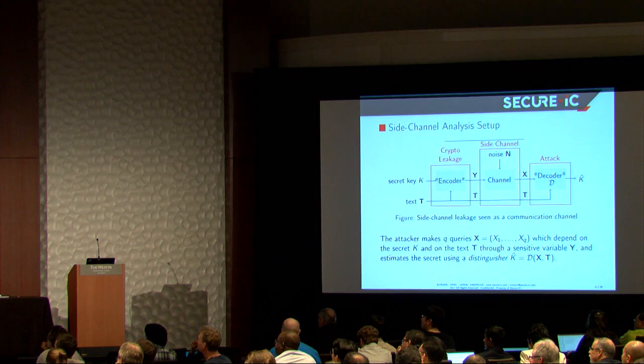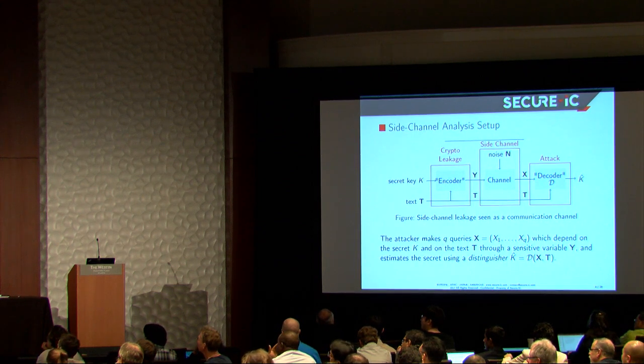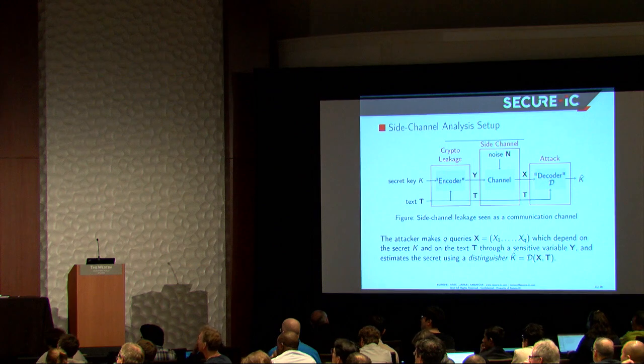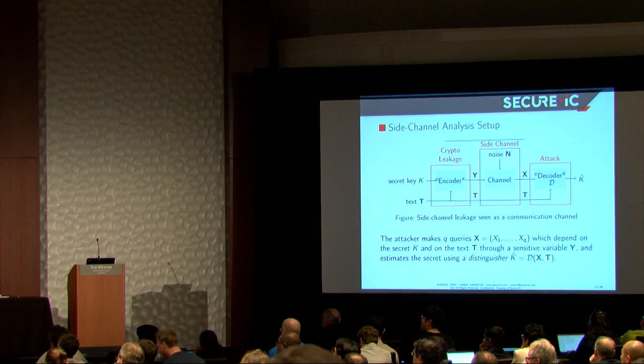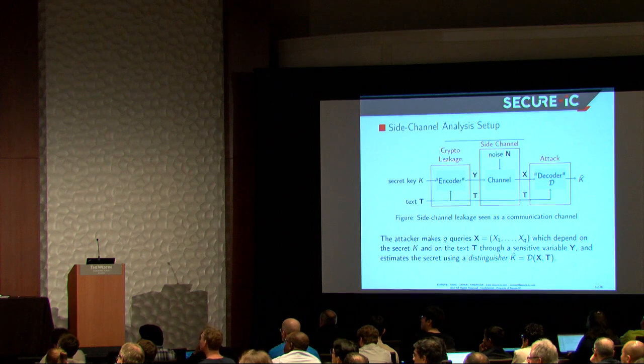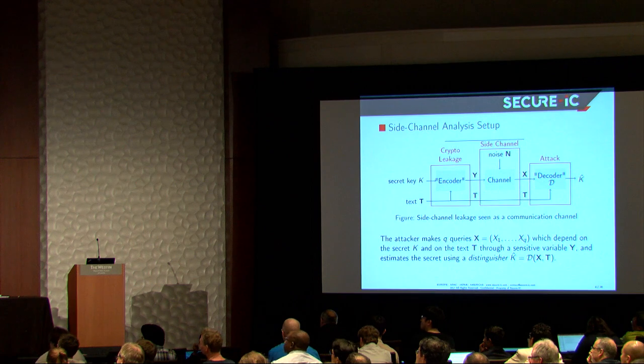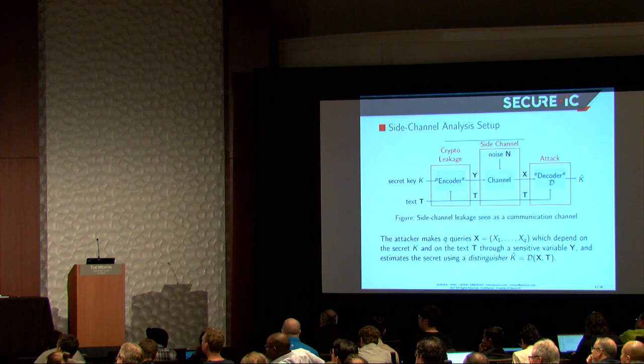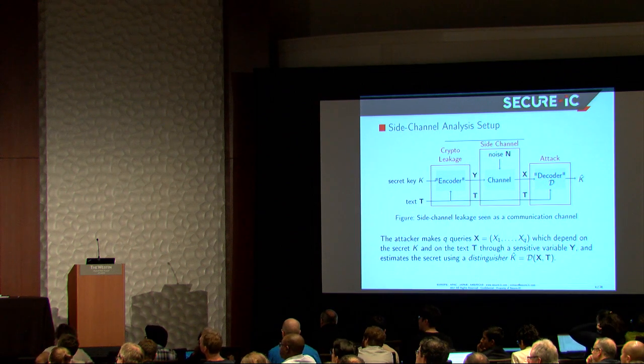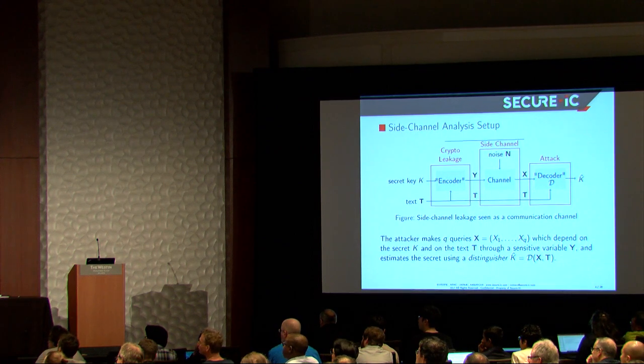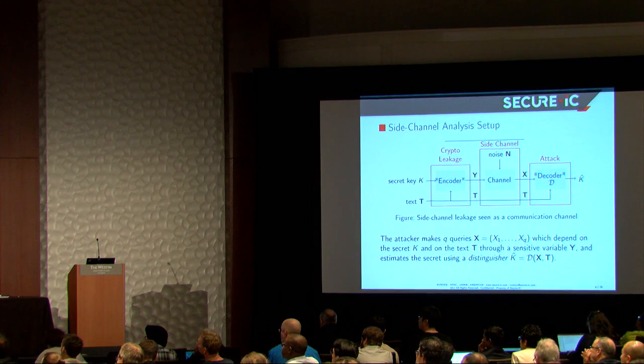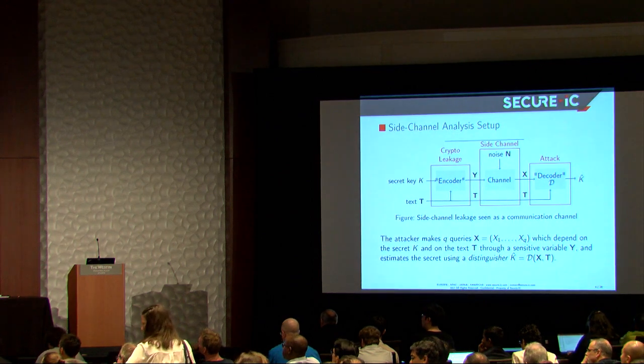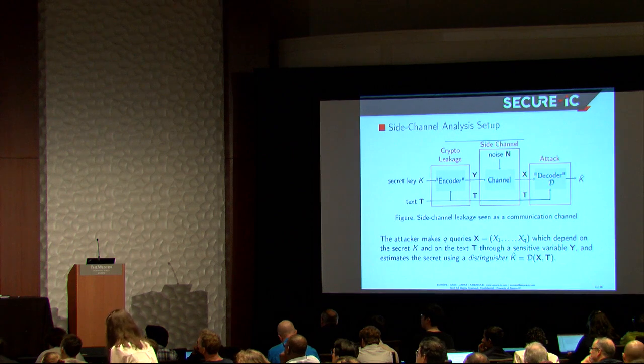So now we still have the key, we try to guess the key here, but now the encoder is pretty simple - we make no assumption. So what's the setting? Like for instance, you are in a test lab, or you evaluate your implementation, you will take Q queries. So in bold, it means that it is several measurements. So the intermediate variable, the sensitive variable here which is leaked, is denoted Y. So it depends on the text, and the text is also known by the attacker.